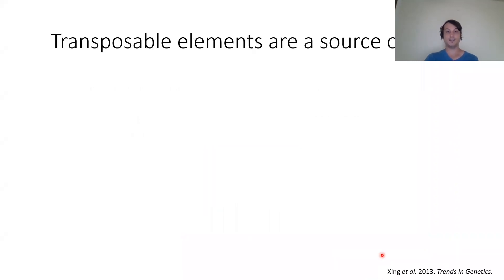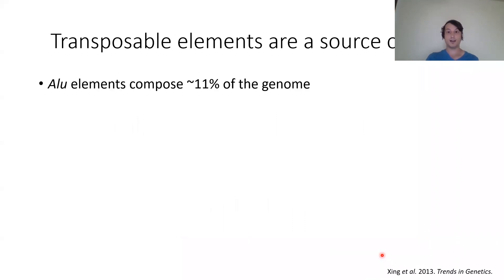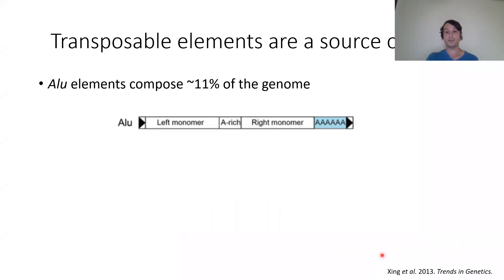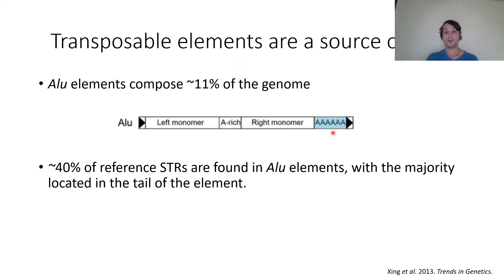As an interesting aside, a lot of my past work was in transposable elements, particularly Alu elements. Alu elements make up about 11% of the genome with 1.1 million scattered throughout. They have a left monomer, a right monomer, an A-rich region, and a poly-A tail generally between 14 and 20 bases long. With every insertion there's potential for a new STR, and looking at the reference genome, about 40% of all reference STRs are found in Alu elements, the vast majority in the poly-A tail.